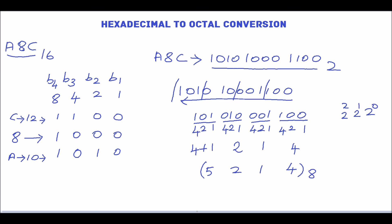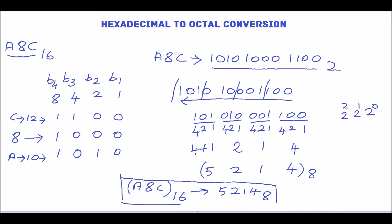This is the octal equivalent for the binary number. So the hexadecimal number A8C base 16 can be represented as 5214 in the octal number system. Hope you learned the hexadecimal to octal conversion. Thank you.